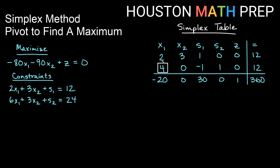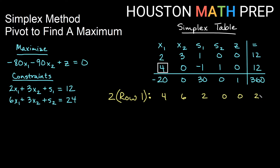My new pivot is the entry 4. The entries above and below it in the same column — the 2 and the negative 20 — need to be reduced to zero. Starting with the 2: rather than multiply by a fraction, I'll double row one first to get a 4 that I can combine with the pivot's 4. So I multiply row one by 2, giving: 4, 6, 2, 0, 0, 24. Then since I already have a positive 4, I multiply the pivot row by negative one — remember, we change the sign of the pivot row — giving a negative 4, so adding together gives 0 in the place I want.